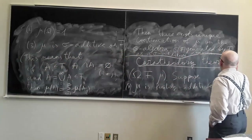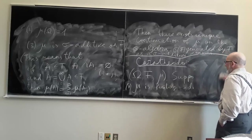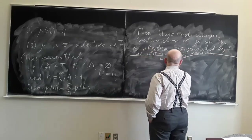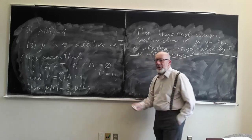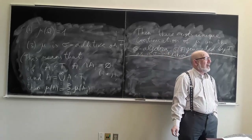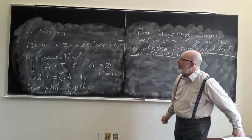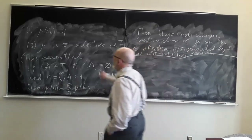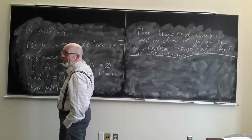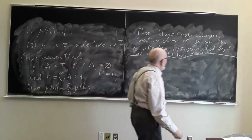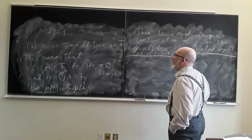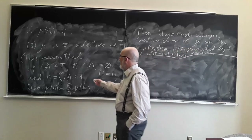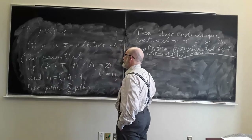This is the Carathéodory theorem. Its proof takes several pages — not hard but a little long — so I take it as granted. Now, which properties do we have? We have finite additivity and we need only the sigma-additivity condition. Let me reformulate this condition. Suppose A = ∪ Aᵢ, and let Bₙ = A \ (A₁ ∪ A₂ ∪ ... ∪ Aₙ). This is a decreasing sequence of sets.